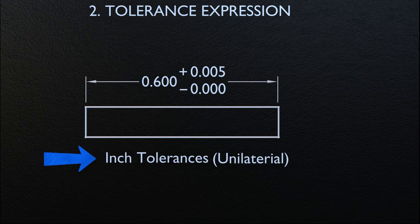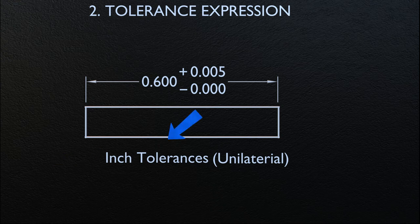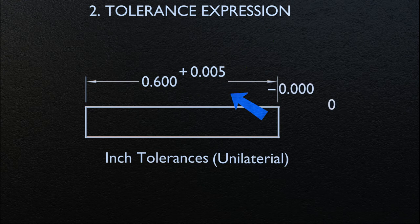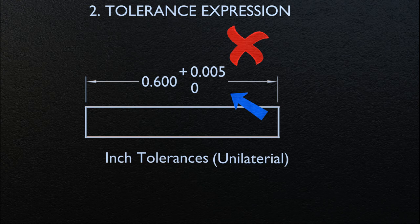Inch tolerances differ slightly from millimeter tolerances. Where inch dimensions are used on the drawing and unilateral tolerancing is used, and either the plus or minus value is nil, the dimension shall be expressed with the same number of decimal places and the appropriate plus or minus sign, as seen on the screen. But if we keep only zero without decimal places as we did for millimeter tolerances, it is not good practice.